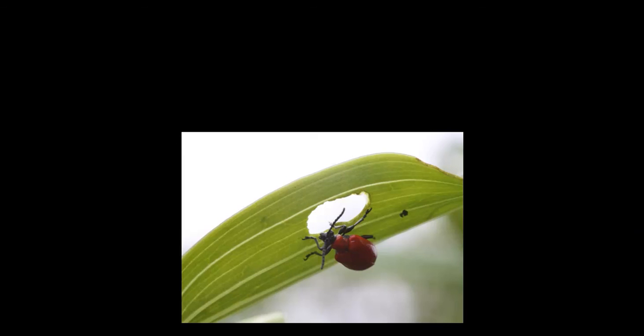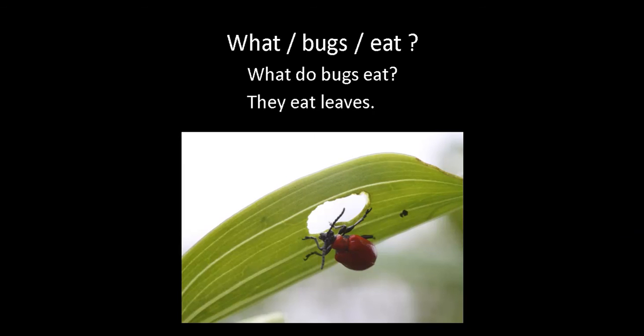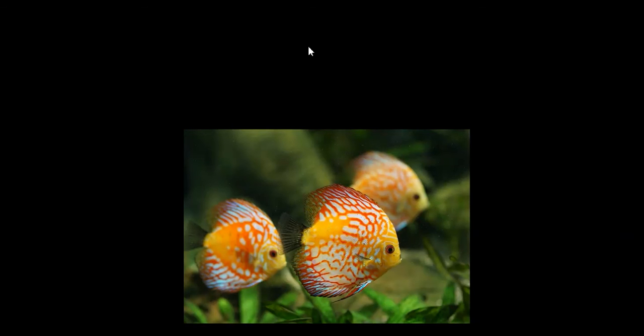Now we're going to practice information questions. Here is our information question word: what. We've got bugs and eat. So what do we need to put here? With bugs, bugs are going to be a they. So here's our question: what do bugs eat? And our answer: they eat leaves. Good job.